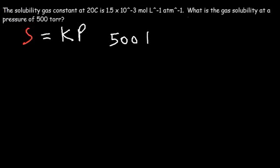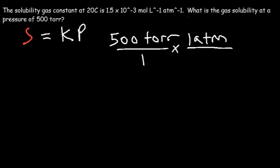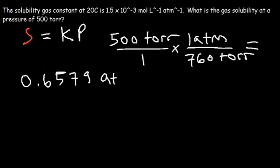So 500 Torr multiplied by 1 atm per 760 units of Torr is equal to 0.6579 units of atm.